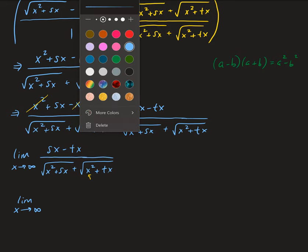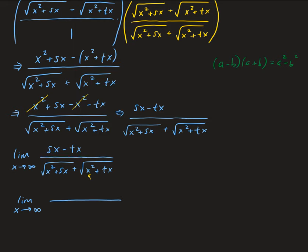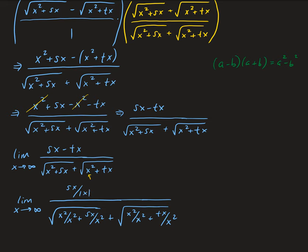Starting in the denominator, we have x squared over x squared plus sx over x squared, plus the square root of x squared over x squared plus tx over x squared. Because x squared is underneath the square root — underneath the radical — when we take it outside the square root we need to take the absolute value, leaving us with sx over the absolute value of x minus tx all divided by the absolute value of x.